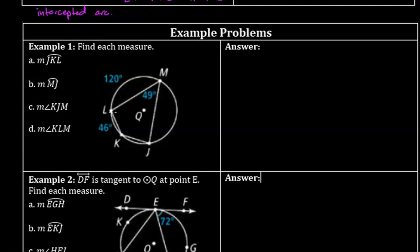We need to find arc JKL, which means we'll probably need arc JK so we can add it to the 46 degrees shown. We also need the measure of arc MJ, the measure of angle KJM, and the measure of angle KLM. So I'm going to set about finding all of these missing parts.